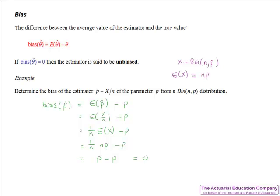Not all estimators are unbiased. For example, in a previous unit we obtained an estimate for sigma squared from a normal distribution, and that turns out to be negatively biased — on average it estimates sigma squared to be slightly smaller than the true value.